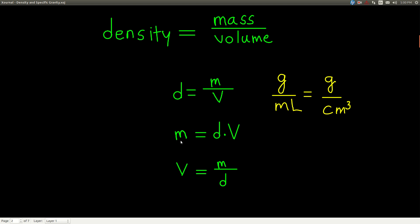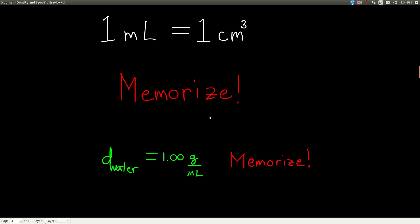If we rearrange this and solve for mass, and we know the density and volume of the object, all we have to do is take density times volume. Likewise, if we know the mass and the density, we can find the volume. Memorize the density equation: density equals mass over volume, and be able to rearrange it for any of the three variables. The units grams per milliliter are exactly the same as grams per centimeter cubed, because one milliliter is exactly the same as one cubic centimeter.